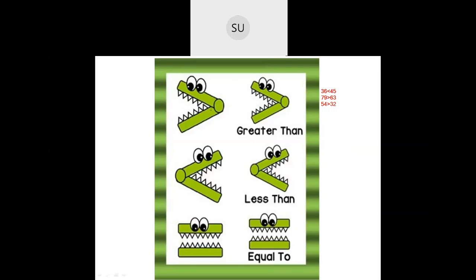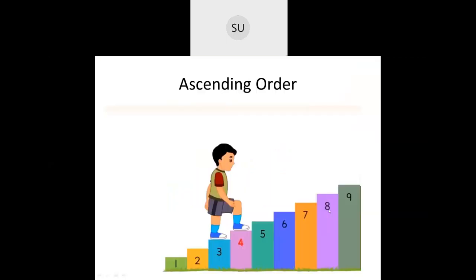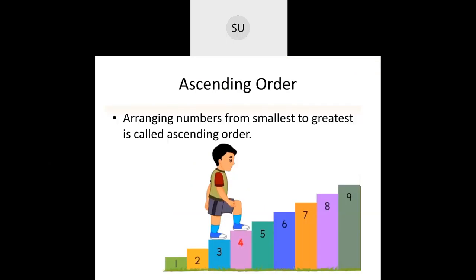Now let's review ascending and descending order. Ascending order is when you arrange numbers from the smallest to the largest. We arrange the numbers: 1, 2, 3, 4, 5, 6, 7, 8, 9 — nine is the greatest and one is the smallest. Think of a boy climbing up the stairs, moving from the smallest number to the largest. That is ascending order.